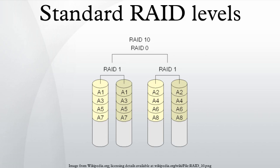RAID 1 is an exact copy of a set of data on two disks. This is useful when RAID performance or reliability is more important than data storage capacity. Such an array can only be as big as the smallest member disk. A classic RAID 1 mirrored pair contains two disks.